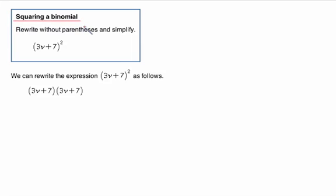So here we'll look at squaring a binomial. The directions say to rewrite without parentheses and simplify. That's always key. The way we'd read this is 3v plus 7 quantity squared, or you could say the quantity 3v plus 7 squared.